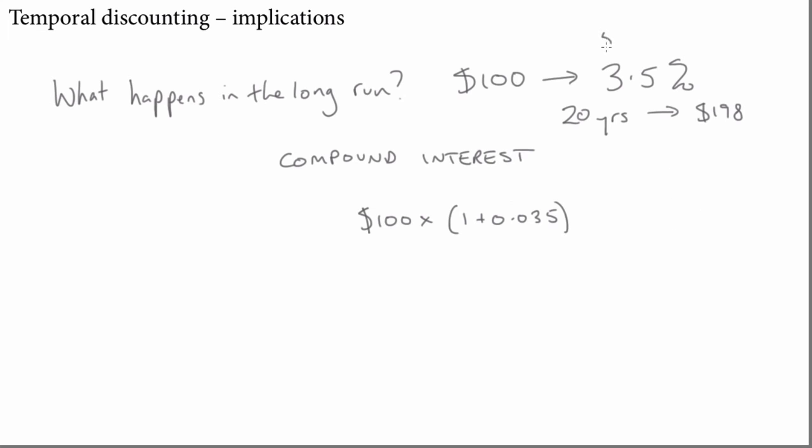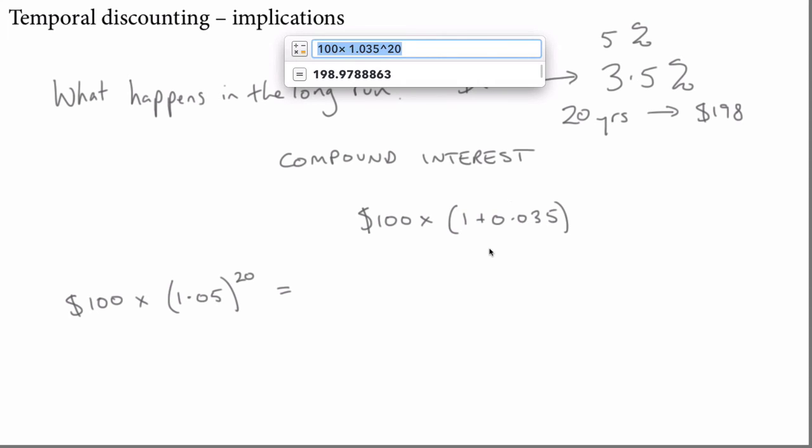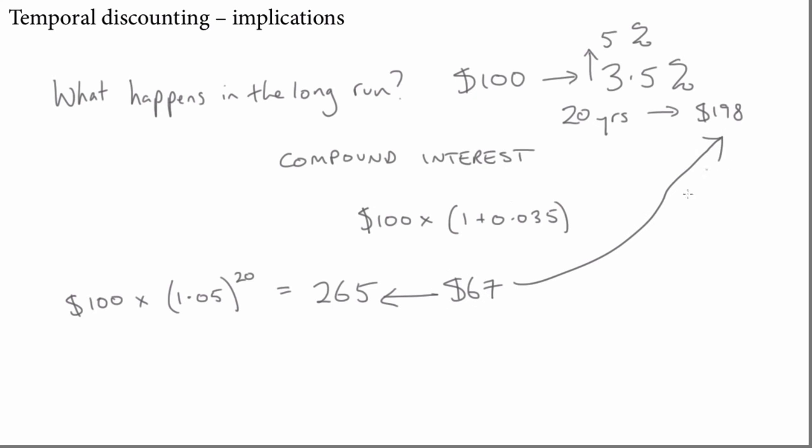Now let's consider a 5% interest rate. So, what we want to work out is 100 times 1.05 to the power of 20. Trusty calculator again, 100 times 1.05 to the power of 20. And now we're up to $265. A modest change in interest rate, a pretty dramatic change, a $67 change between this figure and this figure when you're considering over a 20-year timescale.